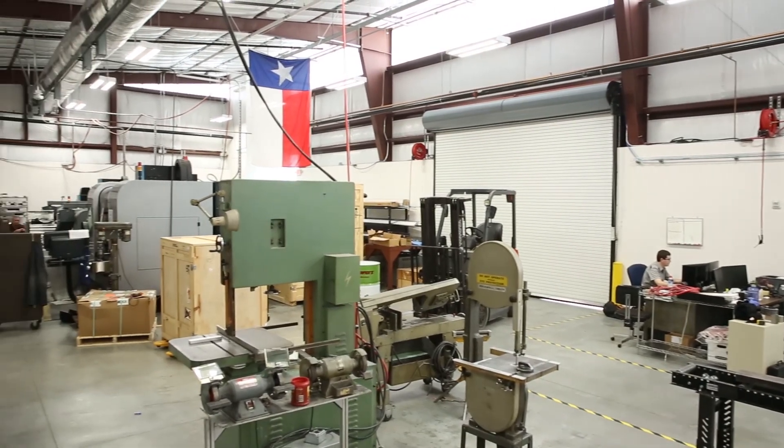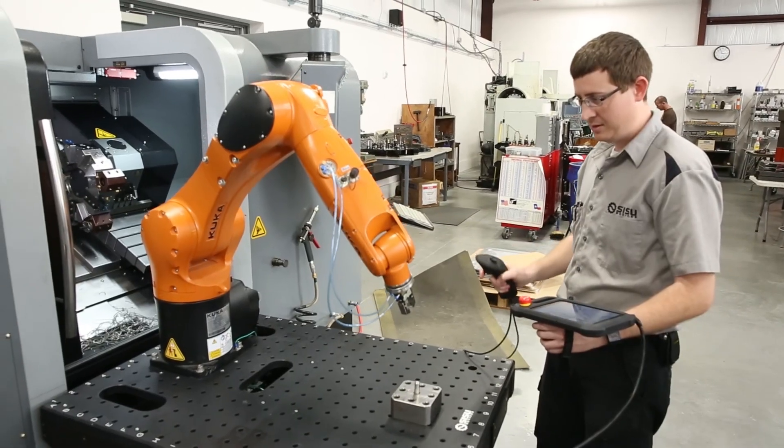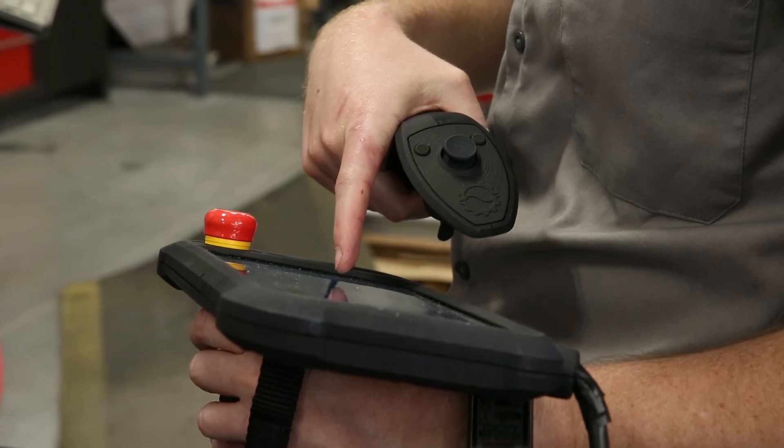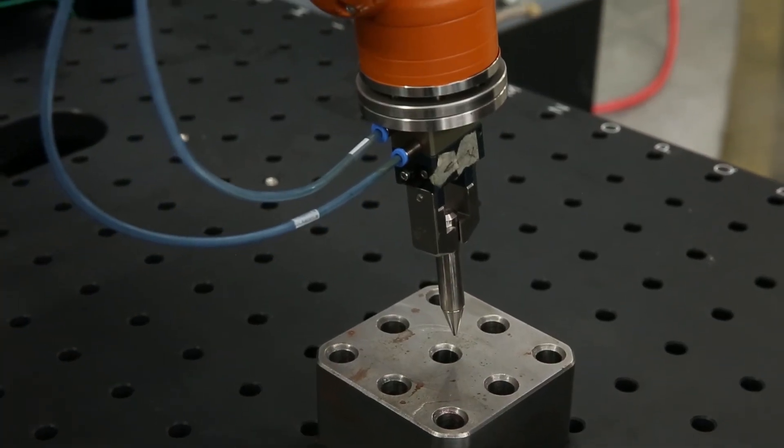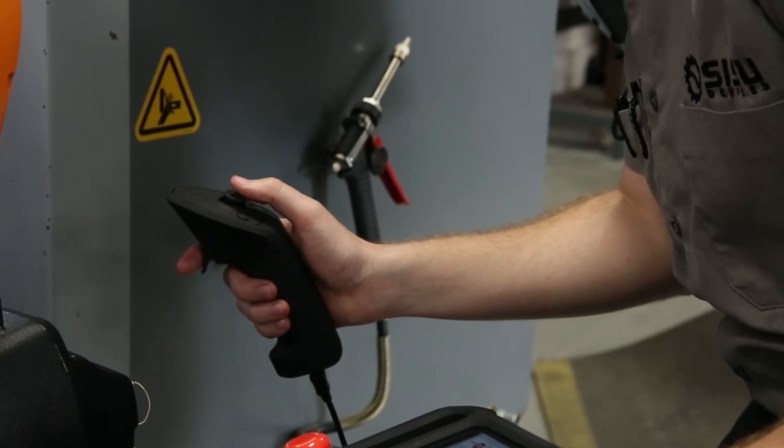In our machine shop, we have high mix, low volume, and constant part changeover. Long programming times have made robots completely impractical for us. With Voodoo, our machinists wheel the robot over and within minutes, they write their own program, and we've never sent them to robot training.